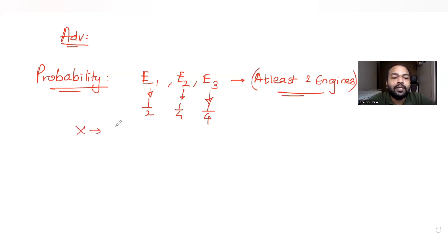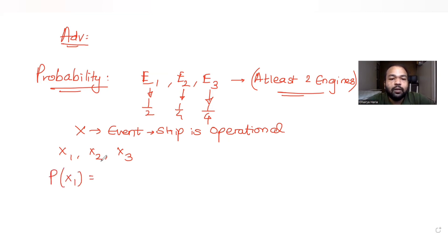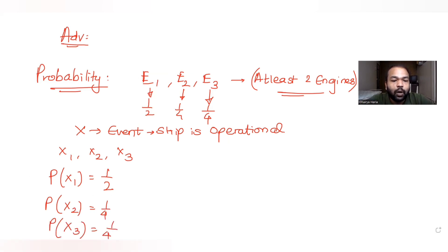X is the event that the ship is operational. X1, X2 and X3 denote the events that engines E1, E2 and E3 are functioning respectively. So probability of X1 is 1/2, probability of X2 is 1/4, and probability of X3 is 1/2.